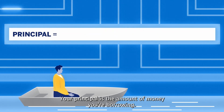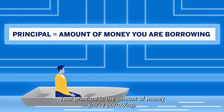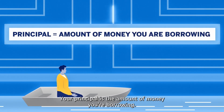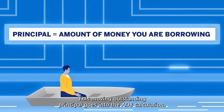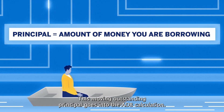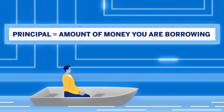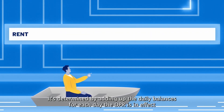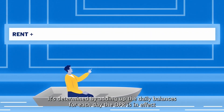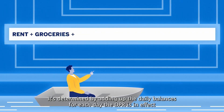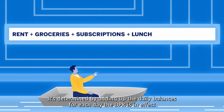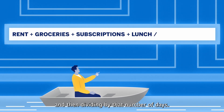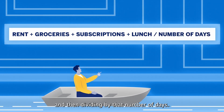Your principal is the amount of money you're borrowing. This moving outstanding principal goes into the ADB calculation. It's determined by adding up the daily balances for each day the DPR is in effect, and then dividing by that number of days.